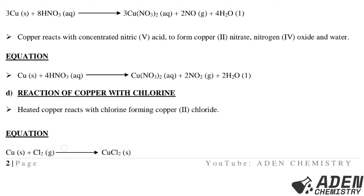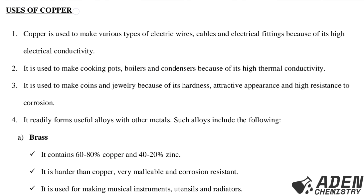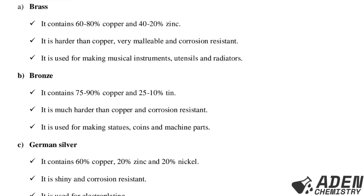Next, we proceed to the uses of copper metal. Number one, copper is used to make various types of electric wires, cables, and electrical fittings because of its high electrical conductivity. Number two, it is used to make cooking pots, boilers, and condensers because of its high thermal conductivity. Number three, it is used to make coins and jewelry because of its hardness, attractive appearance, and high resistance to corrosion.